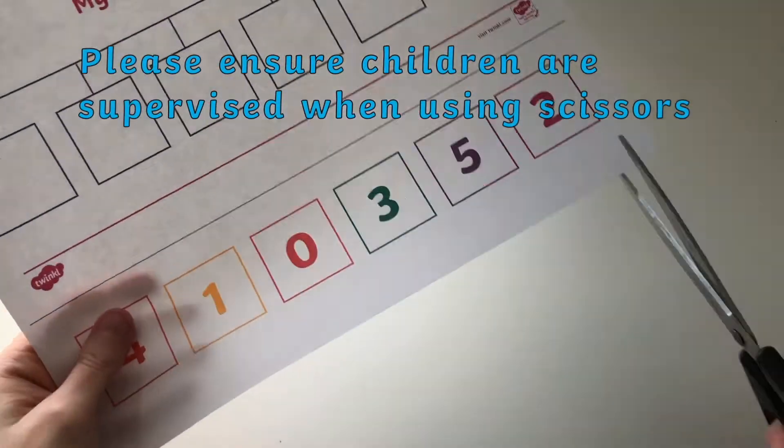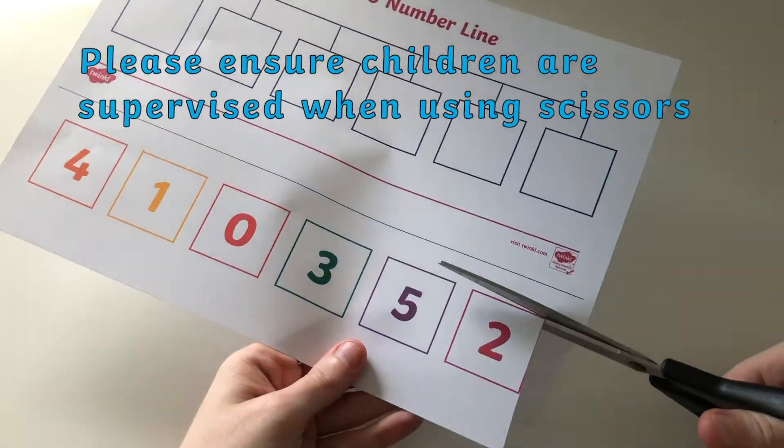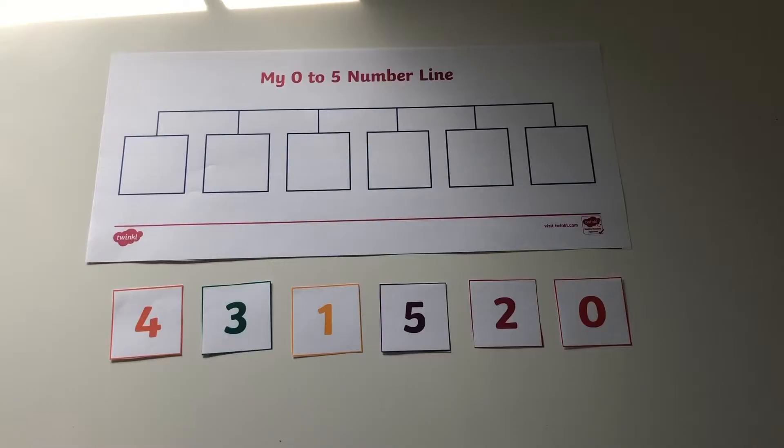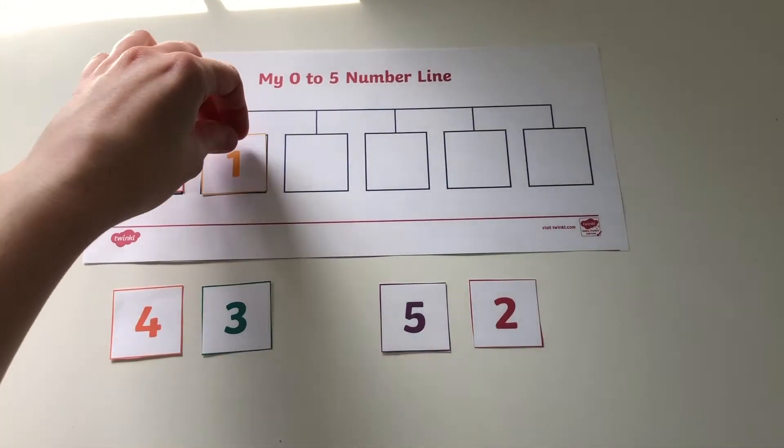Once it's printed out, children can practice their cutting and fine motor skills by cutting out the numbers. Can children rearrange the numbers into the correct order from smallest to biggest?